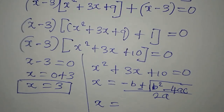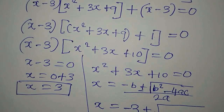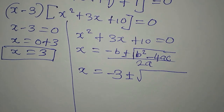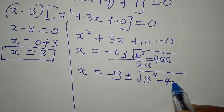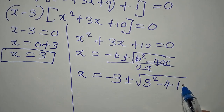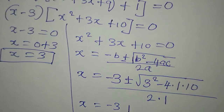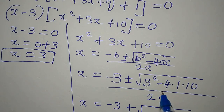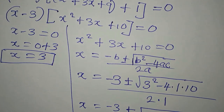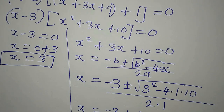Substituting: x equals minus 3, plus or minus the square root of 3 squared minus 4 times 1 times 10, all divided by 2 times 1. There's no need to put 3 squared in brackets since there's no negative. So we have the square root of 9 minus 4 times 10, which is 40, divided by 2.